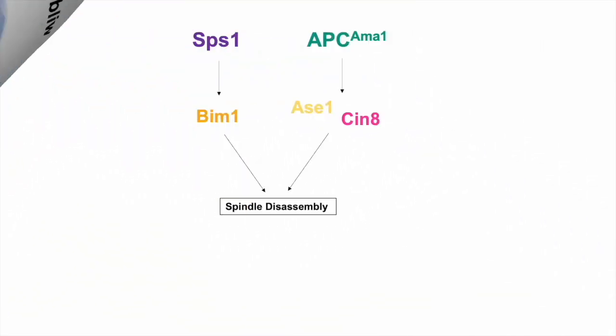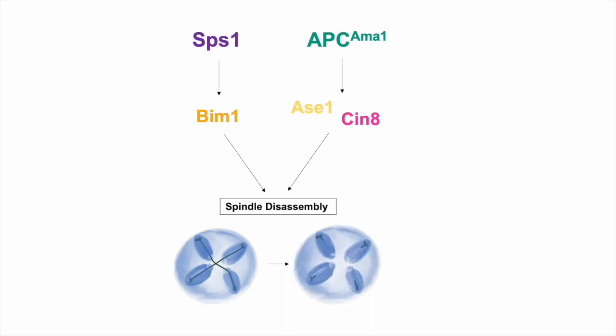This work begins to define the regulatory network used to disassemble spindles after meiosis II, identifying potential targets for these pathways during spindle disassembly in meiosis II.